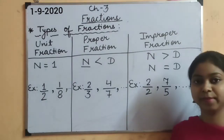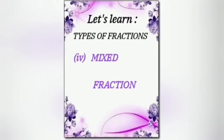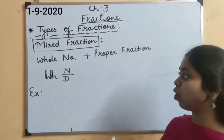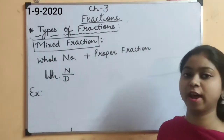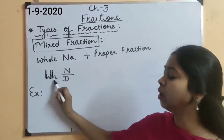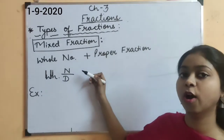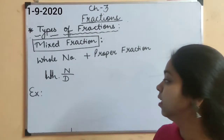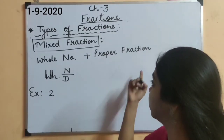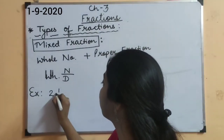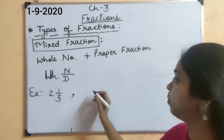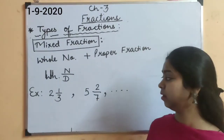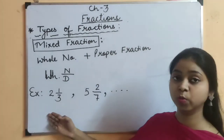Now let's move to mixed fraction. Mixed fraction is a combination of a whole number and a proper fraction. The whole number is written in the middle and then attached with the proper fraction as numerator upon denominator. For example, 2 and 1 upon 3, or 5 and 2 upon 7, and many more. We read them as 2 and 1 upon 3, or 5 and 2 upon 7.